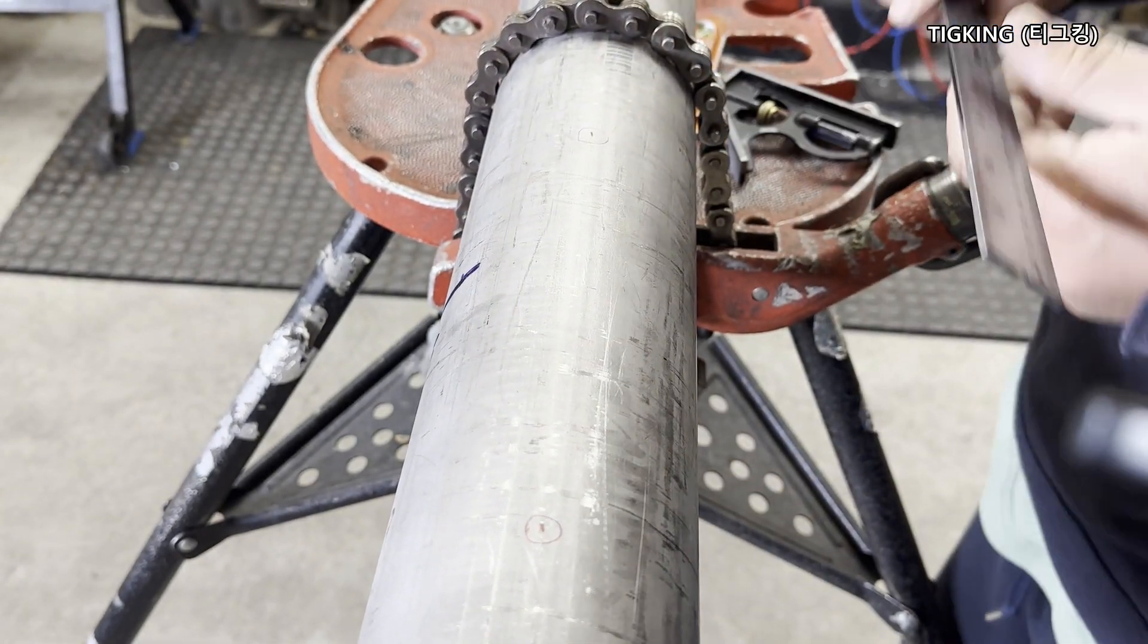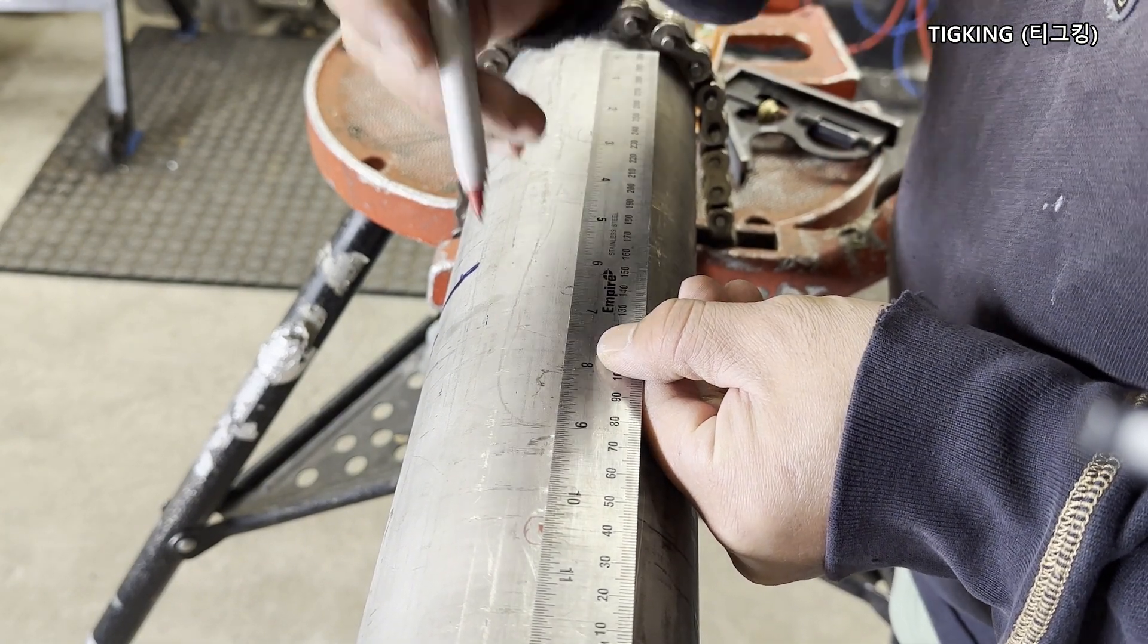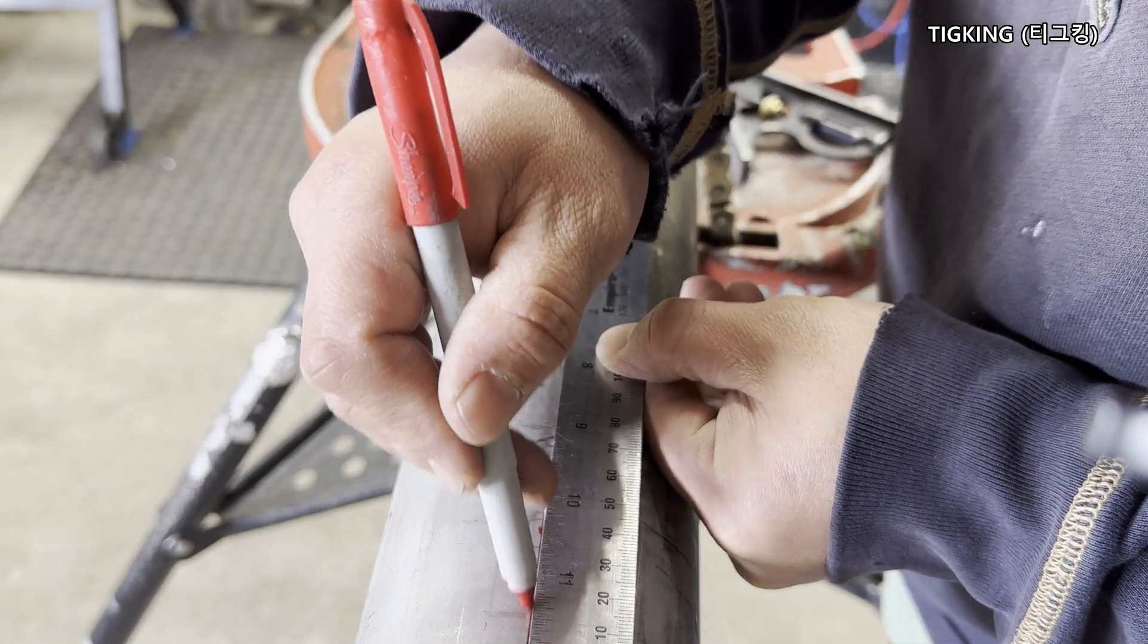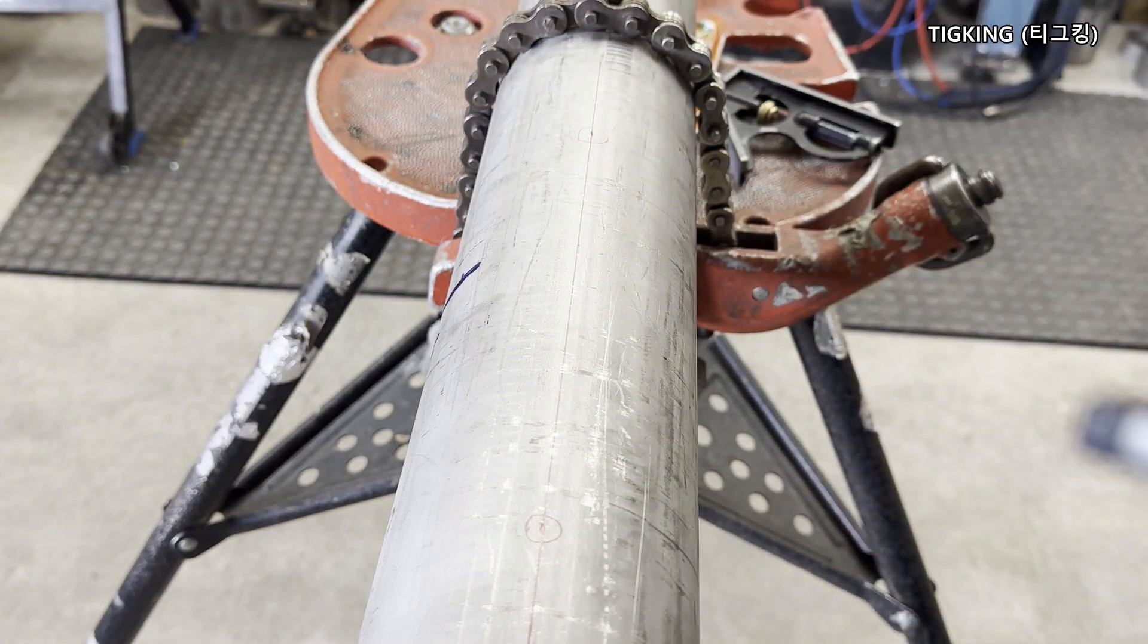Draw a line connecting two marks. This is how to find the center and mark the center line of the pipe.